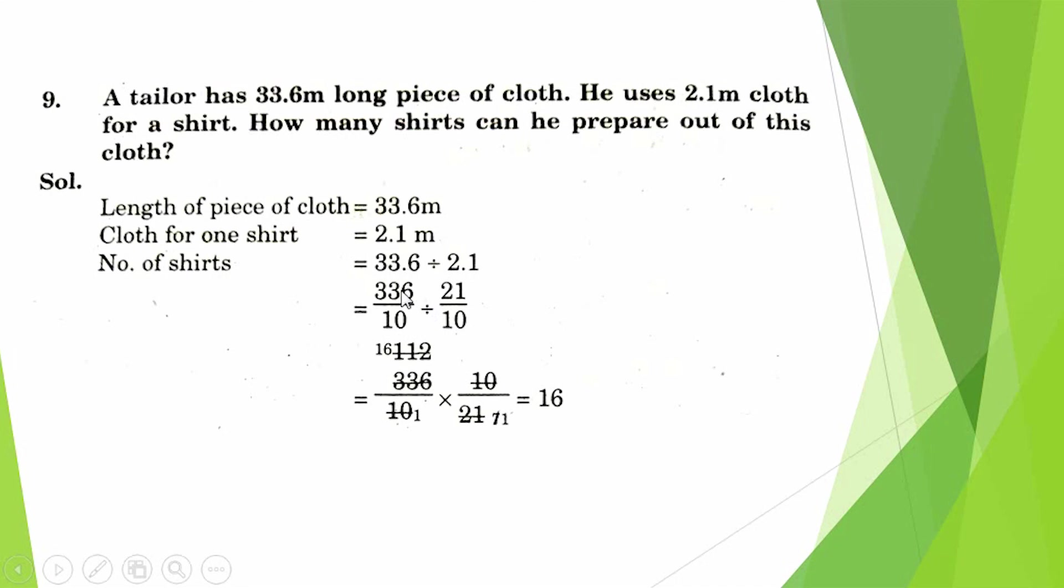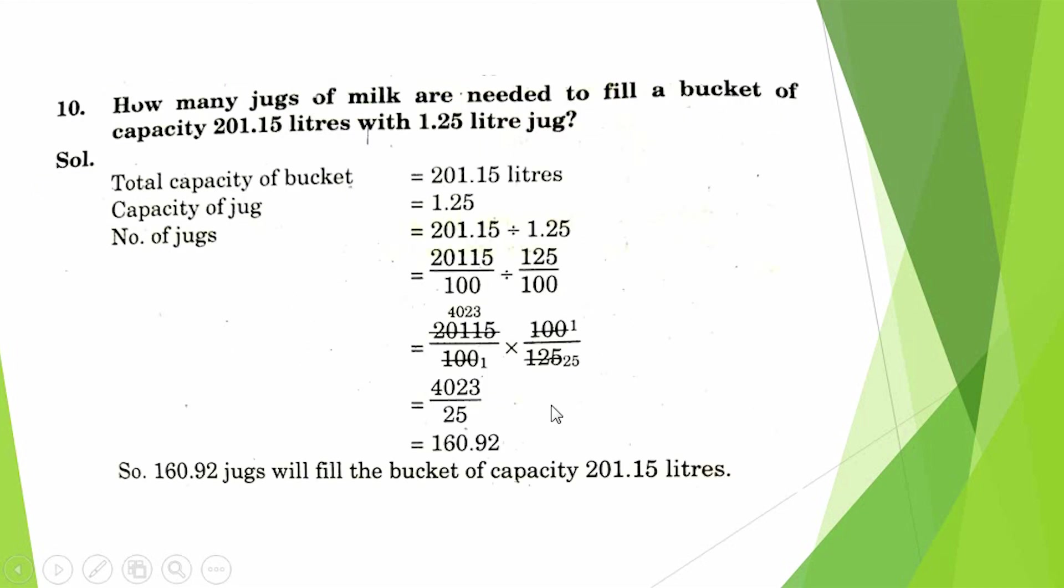We draw 1 at the place of the point and draw zeros. After that, the point values have one value. Therefore write 10. When we convert this division into multiply, the numerator becomes the numerator. This 10 cuts and the answer comes 16 shirts.